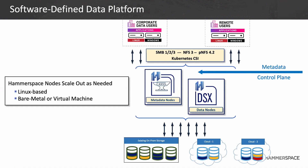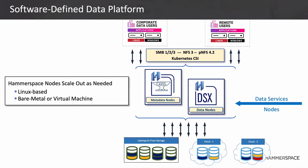Any metadata attribute you can create a policy around — file name, file type, file size, access date, creation date, last modified date. You can create multiple rules around this to move data where you need it, protect it the way you need it, and access it the way you need it. The next component is our DSX nodes. These are our data movers and data replicators, and these are a scale-out architecture — you can have from two to 60 nodes to scale up your performance.